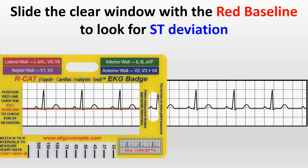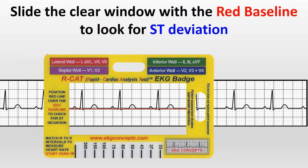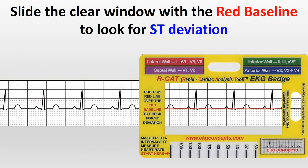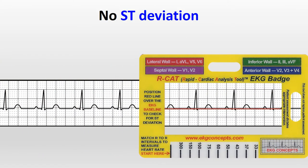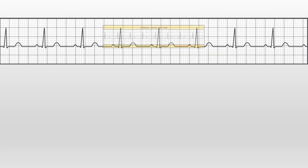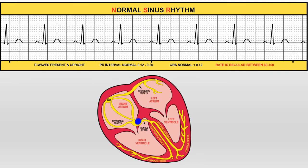Now slide the clear window with the red baseline to look for ST deviation. No ST deviation — so what is your interpretation of this EKG? It meets all the criteria of normal sinus rhythm.